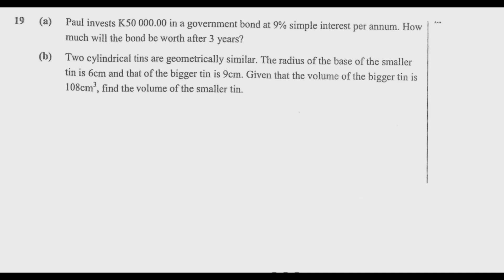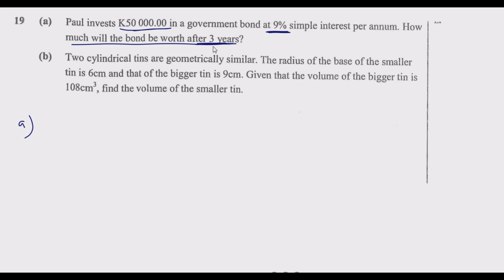Let us look at Question 19, part a. Paul invests 50,000 quatsha in a government bond at 9% simple interest per annum. How much will the bond be worth after three years? The question is asking us to find the worth of the bond. Paul invests 50,000 at 9% interest for three years, and we need to find the total value.